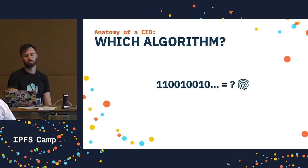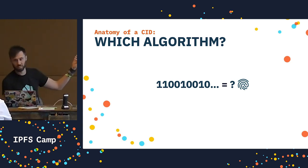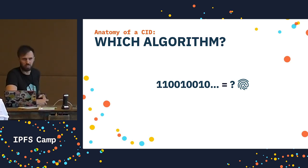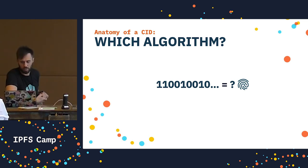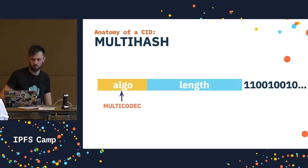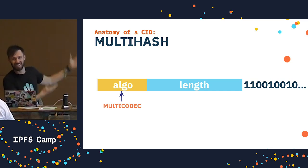The problem with switching algorithms is that given a hash — which is just a series of bits — what algorithm did we use to generate that hash? We need a future-proof way of identifying the hash function used to generate a hash, as well as the hash length. Say hello to multihash.